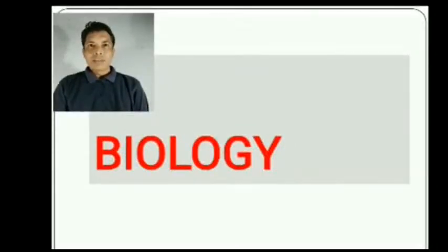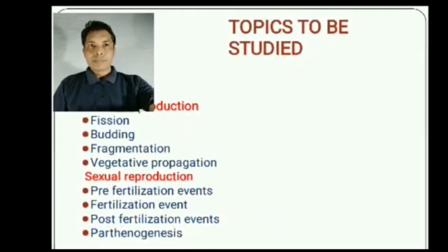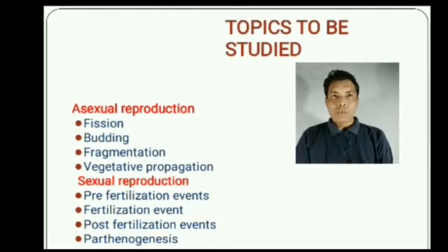Hello students, now I am going to teach you the subject biology. We are going to learn the first part of the chapter reproduction in organisms. The topics to be learned under this chapter are asexual reproduction and sexual reproduction. Under asexual reproduction we have subtopics: fission, budding, fragmentation, and vegetative propagation. Under sexual reproduction we have subtopics: pre-fertilization events, fertilization events, post-fertilization events, and parthenogenesis.